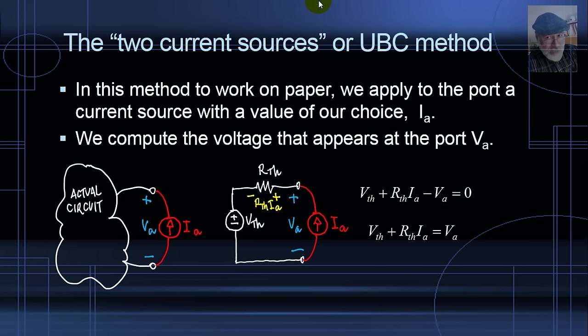Let me move V_A to the right-hand side. We have one equation where we know I_A, the current source value we chose. We know V_A, which is the voltage that we computed with MNA in the real circuit on the left. And we have two unknowns V_TH and R_TH. Of course, what do we do?